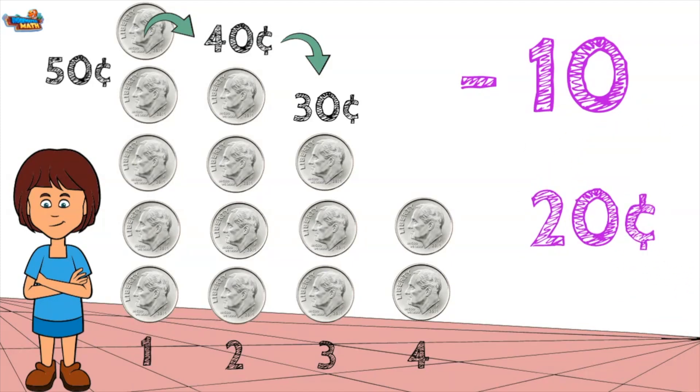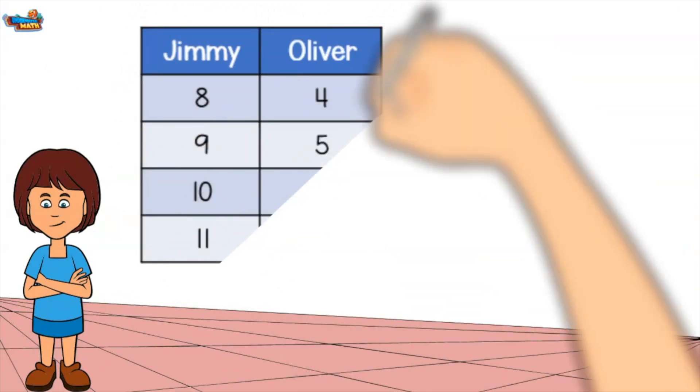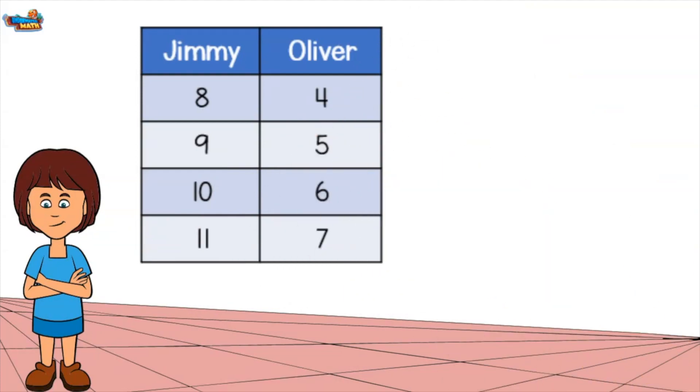Once we know the rule, we can use it to continue any pattern. Last tool for today. Here is a table showing the ages of 2 boys.